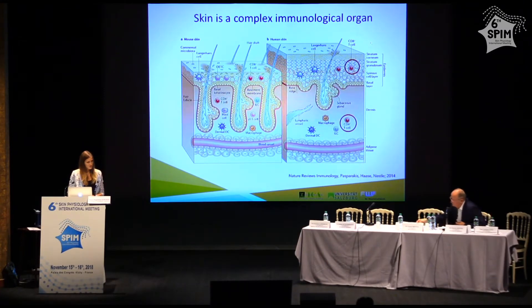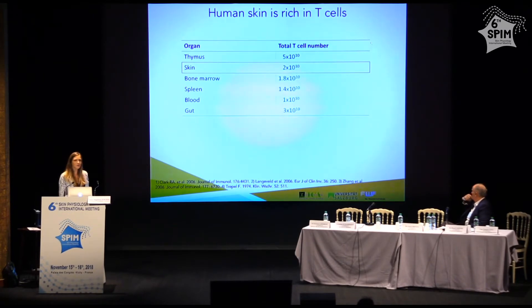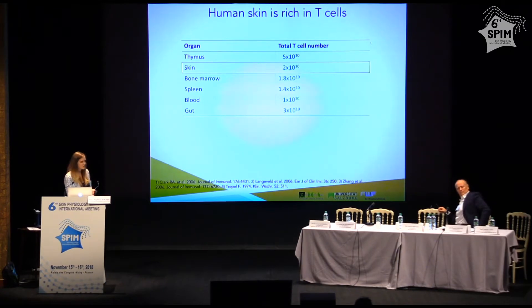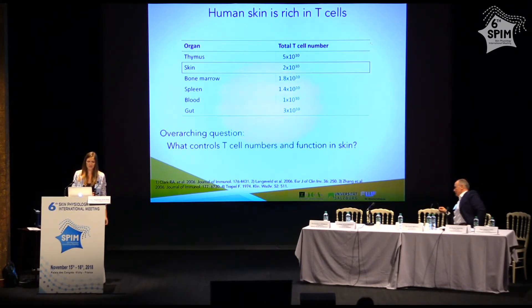Why are we so interested in T cells in the skin? When you look at the skin, you can see that it harbors 20 billion T cells, which is double the number of T cells found within the whole blood circulation. It has also been shown that skin-resident T cells are able to lead to a full-blown immune response even when the supply of fresh T cells from blood is cut. These huge numbers and distinct function lead us to the overarching question: what are the factors that control T cell numbers and function within human skin?